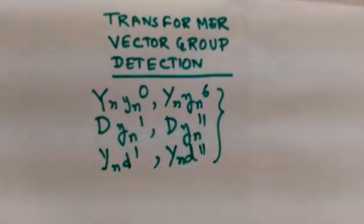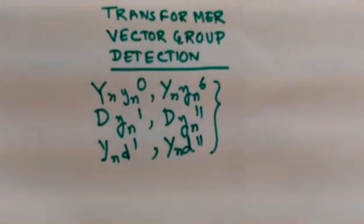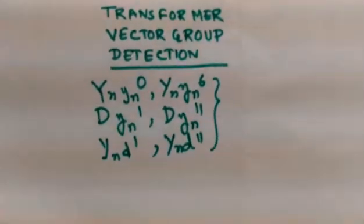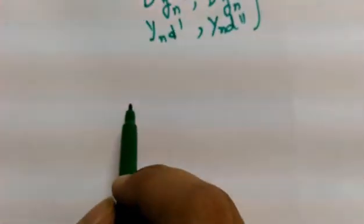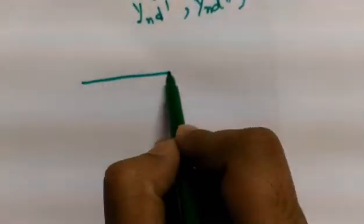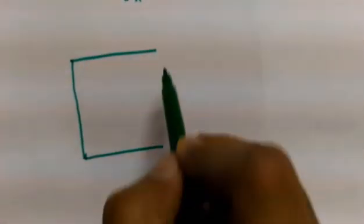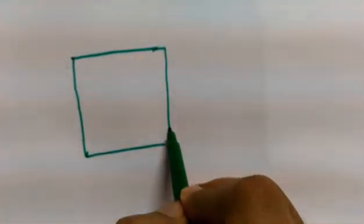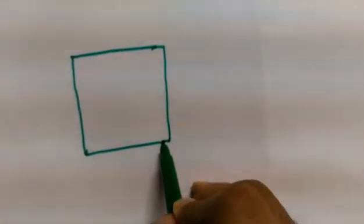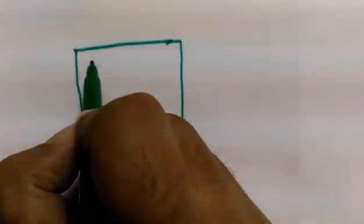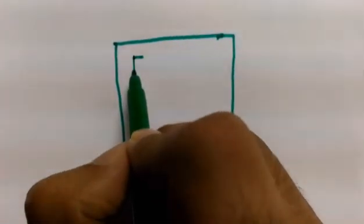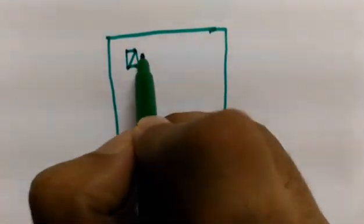Now we will see, after manufacturing of the transformer, how the vector group is identified — whether the actual vector group has been obtained or not. Let us see what the procedures are. We will first discuss about the star-star transformer, that means whether the vector group is YnYn0 or YnYn6. This is my transformer — these are the primary terminals, or the high voltage terminals.